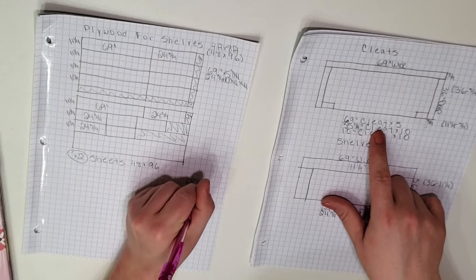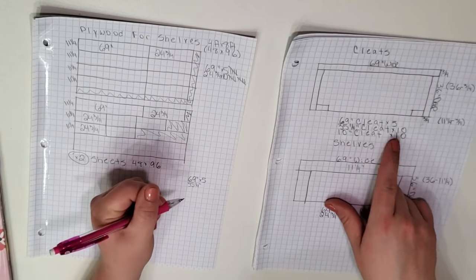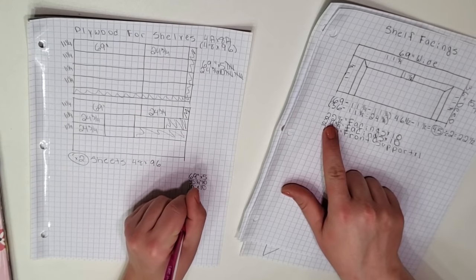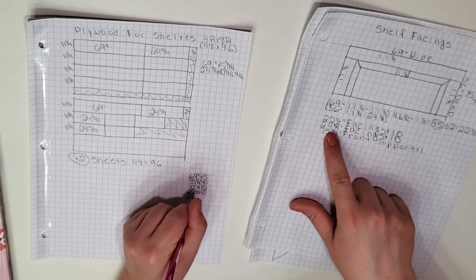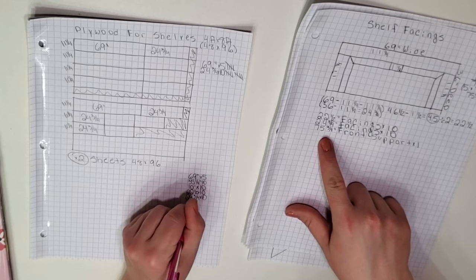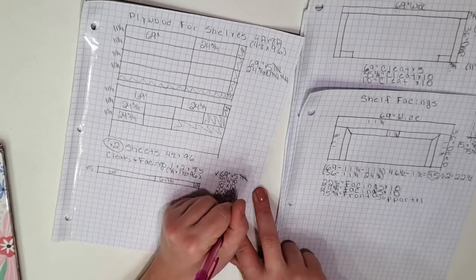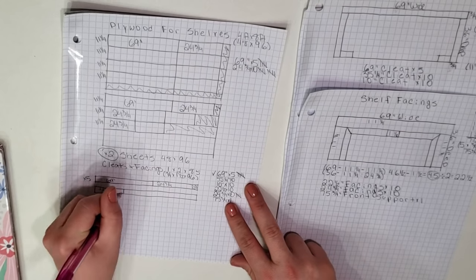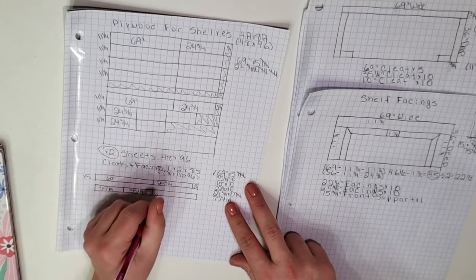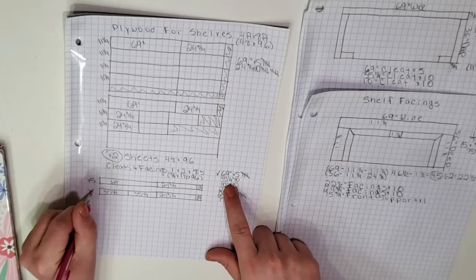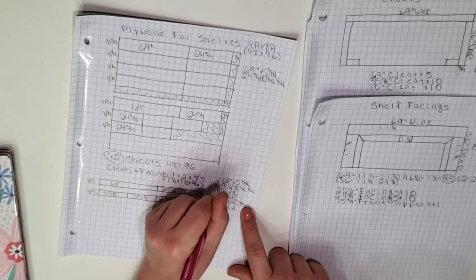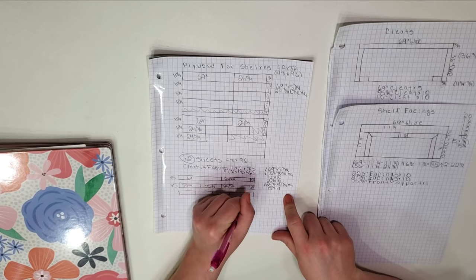Next I need to do the same thing for my cleats and my shelf facings. I wrote all of the sizes and how many of each are needed on the right side. Then I divide eight foot long pieces by the sizes I need and I mark them off as I go. I like to start by subtracting my longest pieces needed first then seeing what's left to use for my smaller pieces.